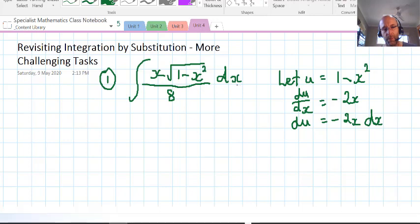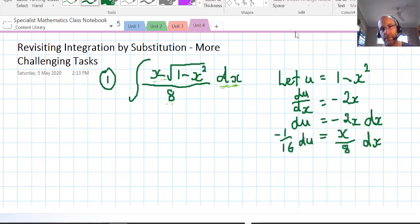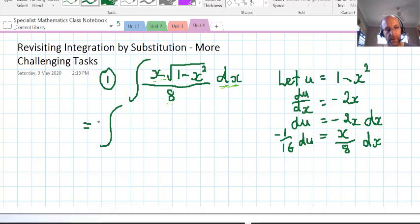But if we take a close look, we have dx. We don't have negative 2x dx, we have x over 8, or 1/8 positive dx. So in order to get that, we need negative 1/16 du equals x over 8 dx.